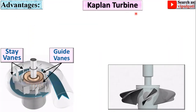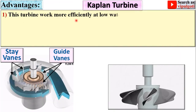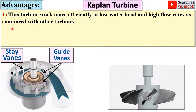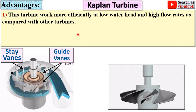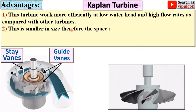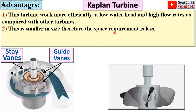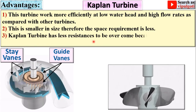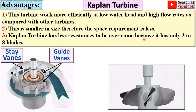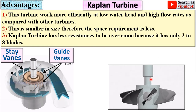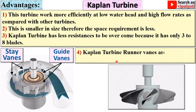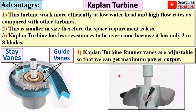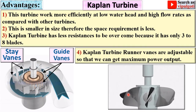Advantages of the Kaplan turbine: It works more efficiently at low water head and high flow rate compared to other turbines. It is smaller in size, so space requirement is less. It has less resistance to overcome because it has only three to eight blades. The runner vanes are adjustable so that maximum power output can be obtained.